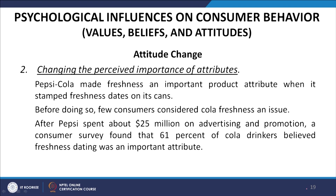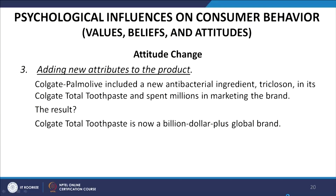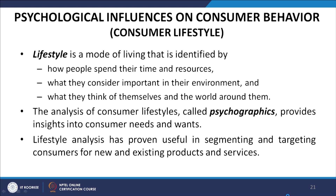After Pepsi spent about $25 million on advertising and promotion, a consumer survey found that 61 percent of cola drinkers believed freshness dating was an important attribute. Third, adding new attributes — Colgate Palmolive introduced a new antibacterial ingredient, triclosan, in its Colgate Total Toothpaste and spent millions marketing the brand, resulting in Colgate Total becoming a billion-dollar-plus global brand.